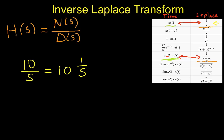Now that I have this form, I know that the 1 over s term transforms to u of t, the unit step function. What do I do with this 10 out in front of it?